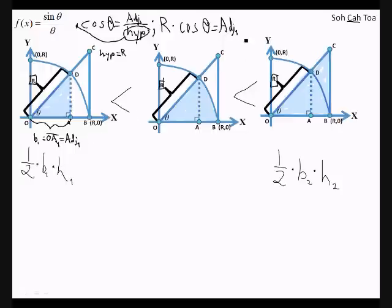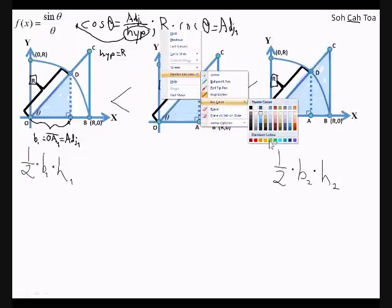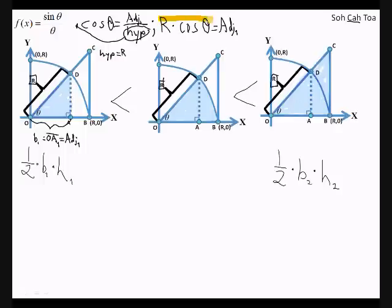So basically, now we know what adjacent 1 is. We just figured it out. Let me highlight it to further prove the point. So we have the radius, or hypotenuse, times cosine theta is equal to adjacent 1. Adjacent 1 is here,